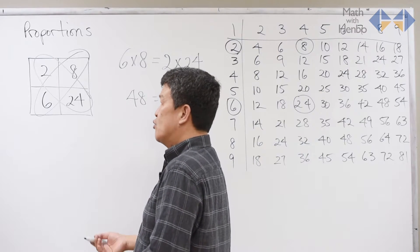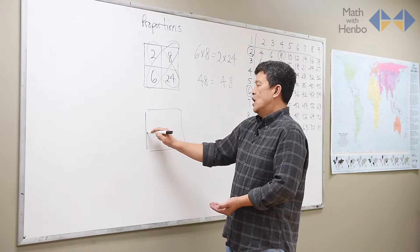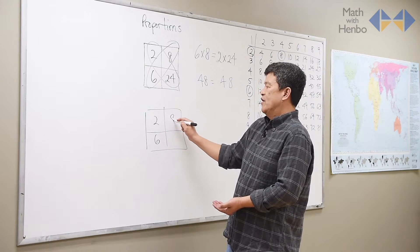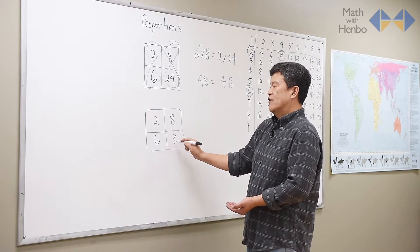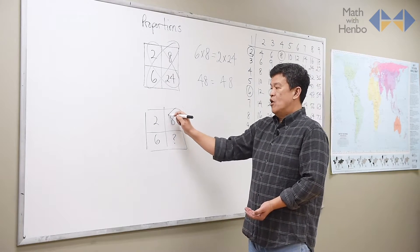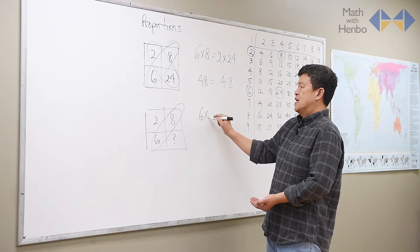The trick arises when one of the values is missing. For example, I'll use the same numbers. If I have 2 and 6, and I'm given 8, I've got to calculate the fourth value. And the best way to do it is multiply the two that pair diagonally, so in this case, 6 times 8.